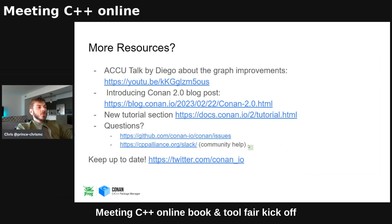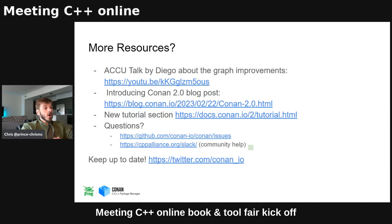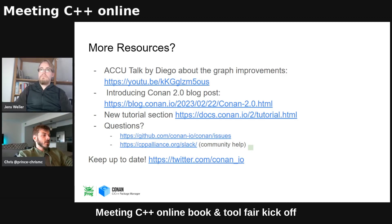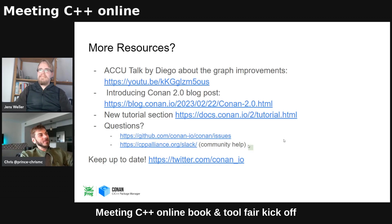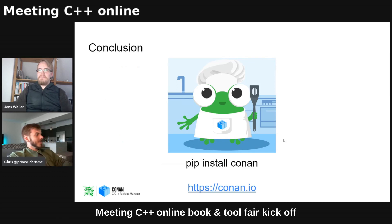Some more resources if you're curious: there's an ACCU talk by Diego from a year ago, an introduction to 2.0 blog post, and the tutorial I mentioned. For questions, the official place to get help is the Conan issues on our GitHub repo. For community help, I highly recommend our CPP Alliance Slack channel — it's one of the most active in the C++ ecosystem. For updates, follow us on Twitter — I run it, I do make typos, you can make fun of me. To get started: pip install conan. That's it. Easy peasy.